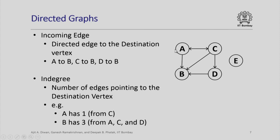For example, if you consider A as a destination vertex, it has only one edge coming to it from C. So, its in degree is 1. B on the other hand has an in degree of 3, because there are edges coming to it from A, C, and D. E again has 0 in degree, because it has no edge coming into it.